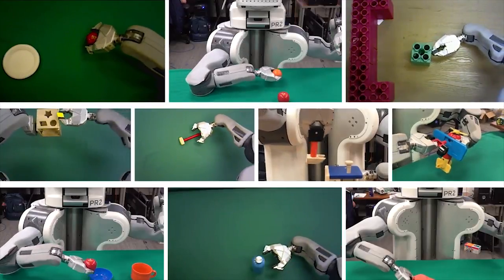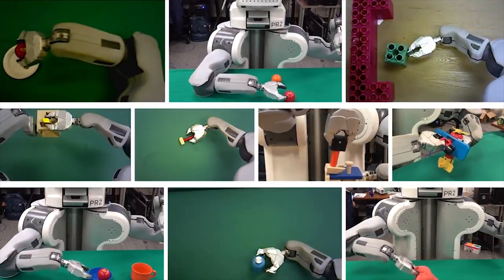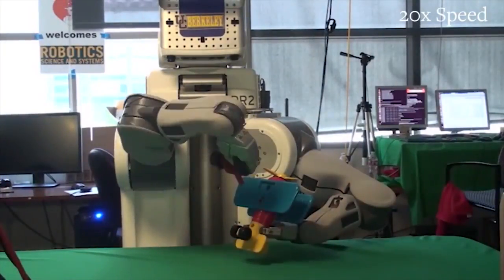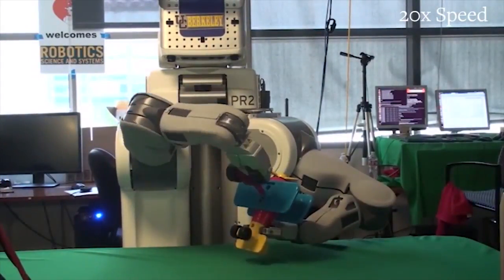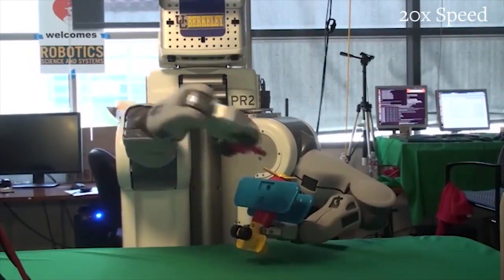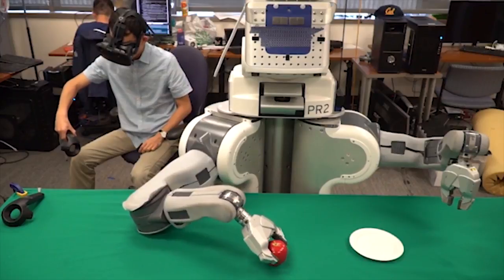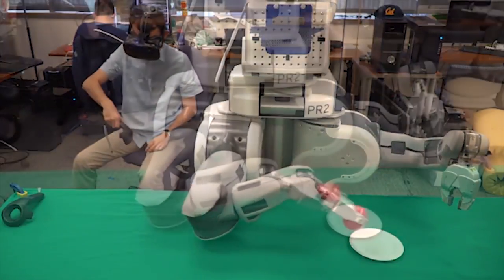Brett learned how to do ten different tasks this way. It seems like only yesterday that Brett needed a lot more programming and time to get that toy airplane piece into place. And now, more grown up, Brett just needs to be shown how it's done, and he's off on his own.